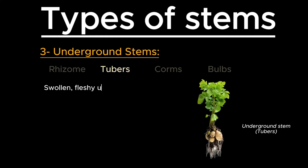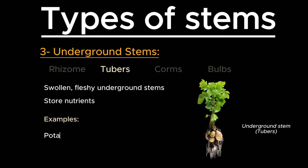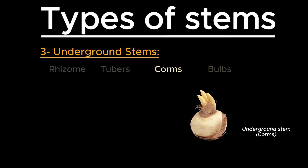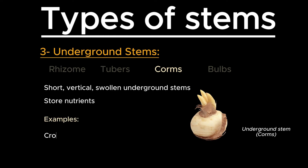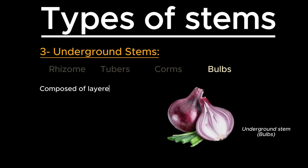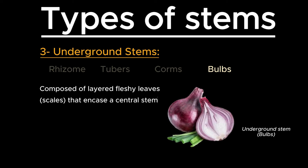Tubers are swollen, fleshy underground stems that store nutrients, such as potatoes and yams. Corms are short, vertical, swollen underground stems that store food, like crocus and gladiolus. Bulbs are composed of layered fleshy leaves that encase a central stem — for example, onions and tulips.